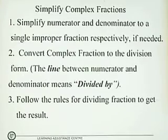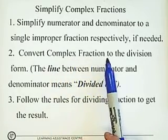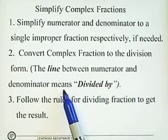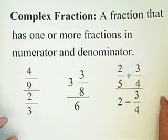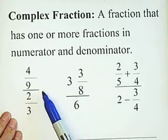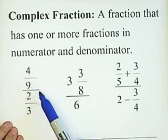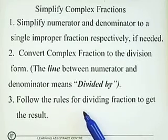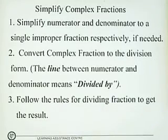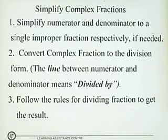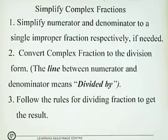The second step: after simplifying, convert the complex fraction into division form. The line between the numerator and the denominator means 'divided by.' So the first example reads as 4 over 9 divided by 2 over 3. The third step is to follow the rules for dividing fractions to get the result. If you still have trouble with dividing fractions, you can go back to the dividing fractions lesson to review.